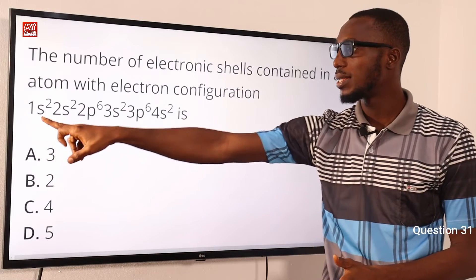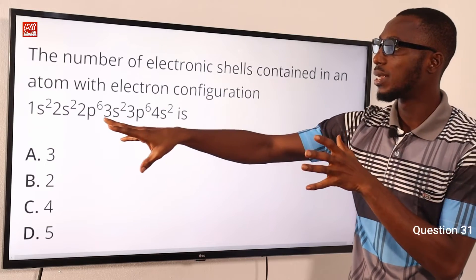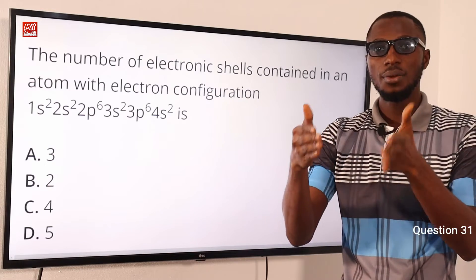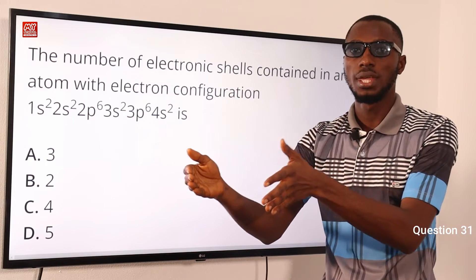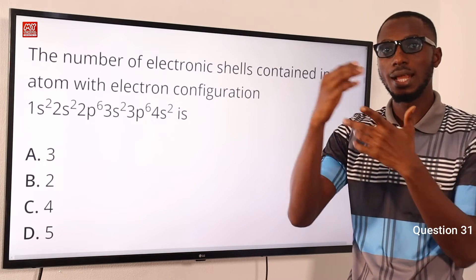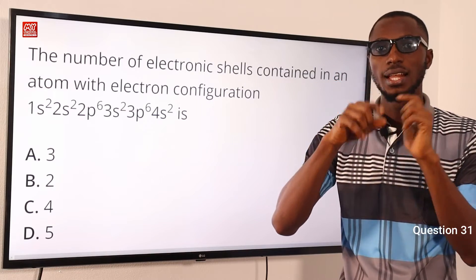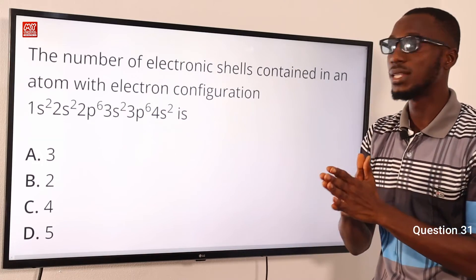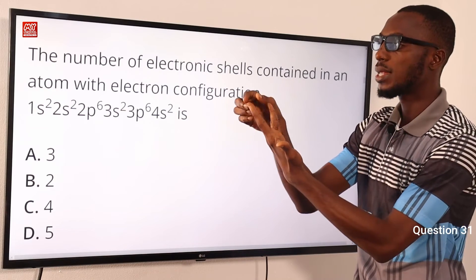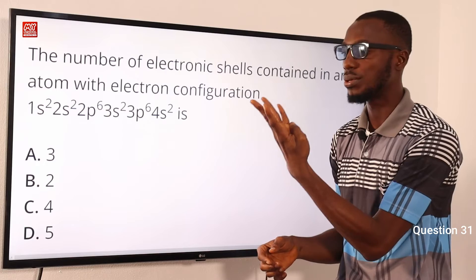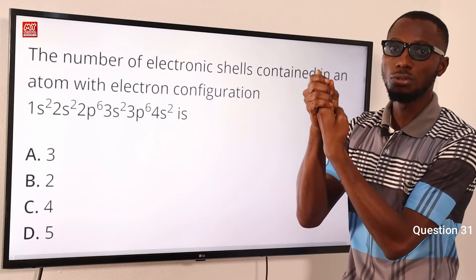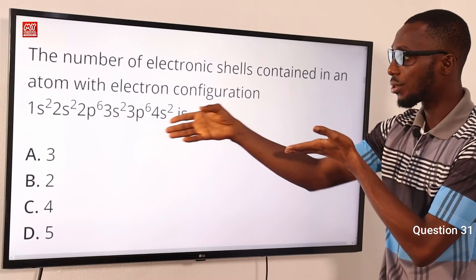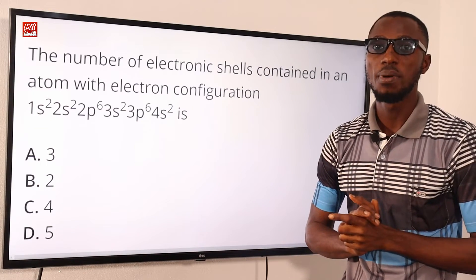The electron arrangement for calcium will be 2, 8, 8, 2. The first shell contains 2 electrons, the next shell 8 electrons, the next 8 electrons, and the last one 2 electrons in the outermost shell — telling you 2 valence electrons. You can see the number of shells is: 2, 8, 8, 2 — making 4 shells in total (2+8=10, 10+8=18, 18+2=20). So the number of shells for this element is 4. Option C is correct.